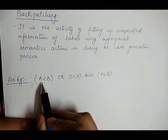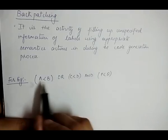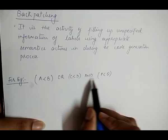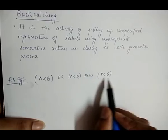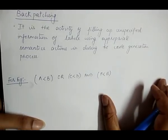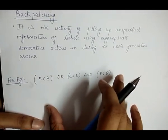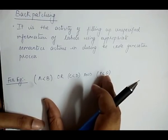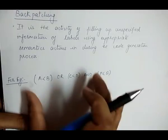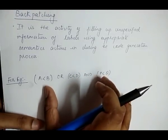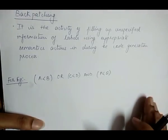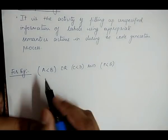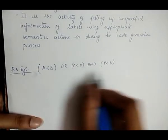Here is the example we will use: the condition is 'a is less than b OR c is less than d AND p is less than q'. We have to generate three-address code for this expression with the help of backpatching.